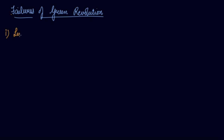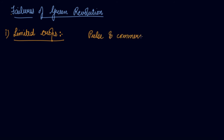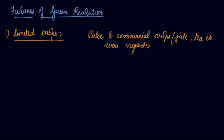Number one is limited crops. The revolutionary rising output is confined mainly to the production of food grains such as wheat and rice, whereas other crops such as pulses and commercial crops such as jute, tea, etc. were neglected. The main focus was given on wheat and rice, so only limited crops were covered under the green revolution.